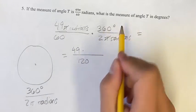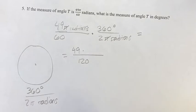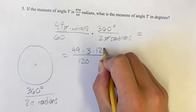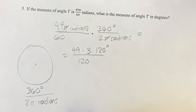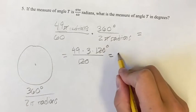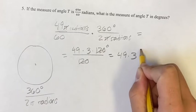So if we think of 360, not just as 360, but as 3 times 120, don't forget the degrees, then the 120s will cancel. We're left with 49 times 3 degrees, which is a lot easier to do.